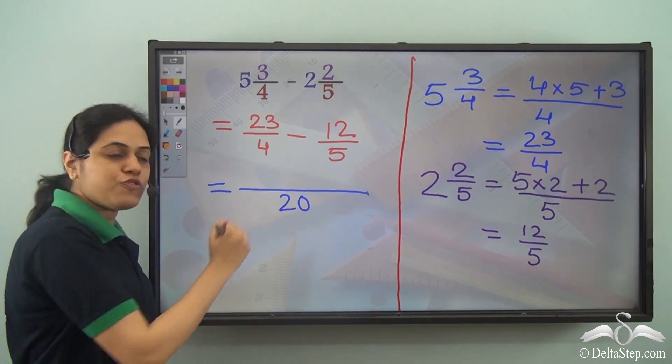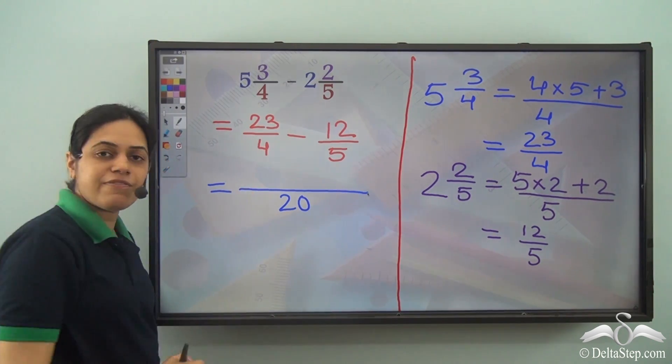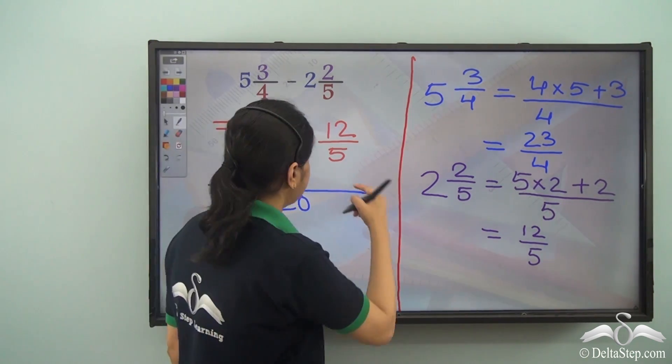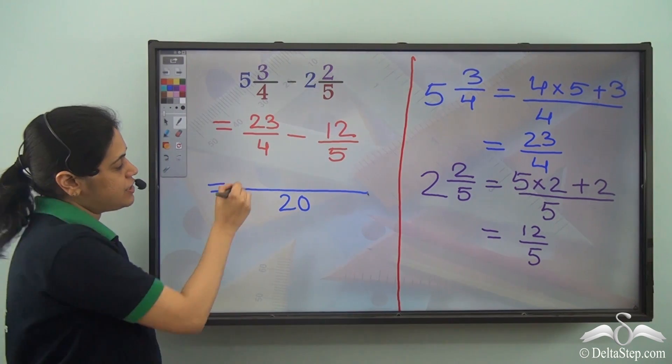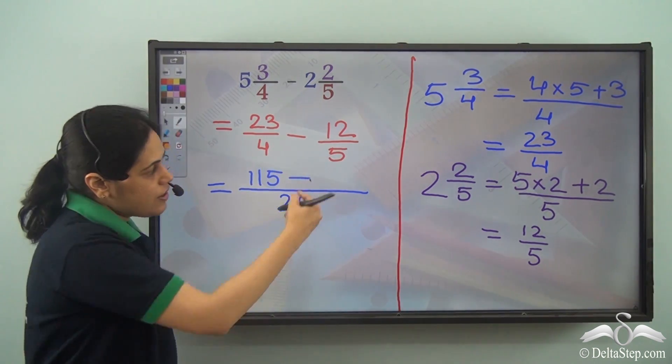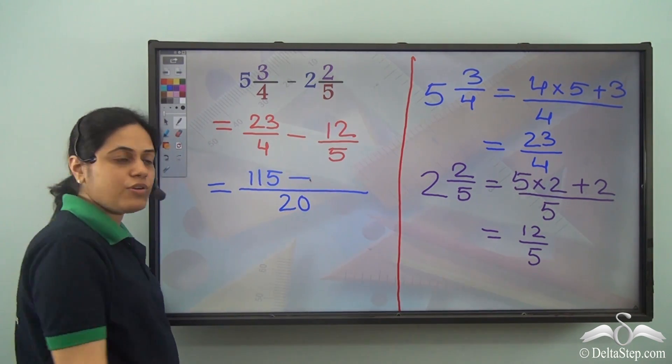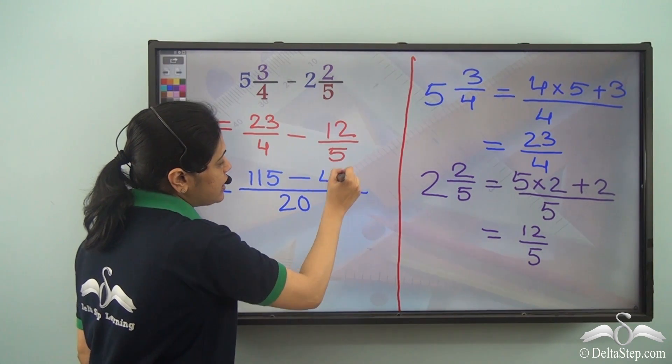Now 4 into 5 is 20, so I need to multiply 23 by 5. Now what is 23 into 5? It is 115. 5 into 4 is 20, so I need to multiply 12 by 4 which is 48.